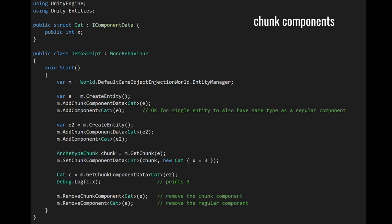For that individual entity, there is not a unique chunk component value. For the whole chunk it's stored in, there's only one chunk component value per chunk component type. For example, we create two entities E and E2, and give them both a chunk component of type cat, but they also both get a regular component of type cat. So within a chunk that stores these entities, each entity has its own cat, but there's also a chunk component cat that belongs to the whole chunk, and there's just one of those per chunk. Within a single archetype, a component type can be used as both a regular component and a chunk component. To access this chunk component, we get a reference to the chunk of entity E and call setChunkComponentData to set the cat's x value to 3.